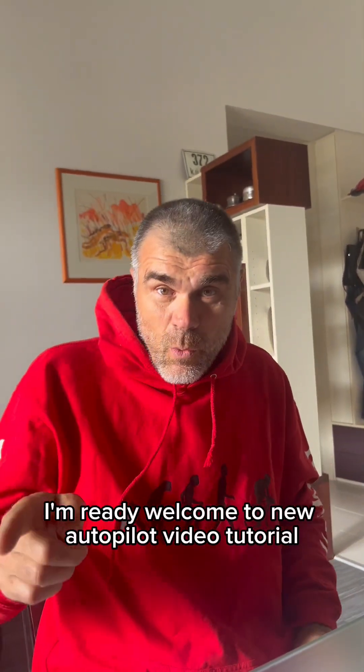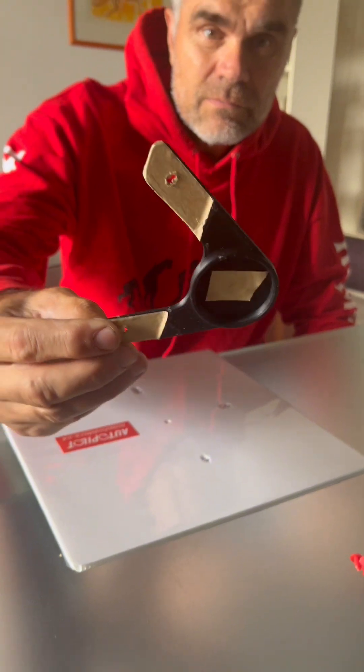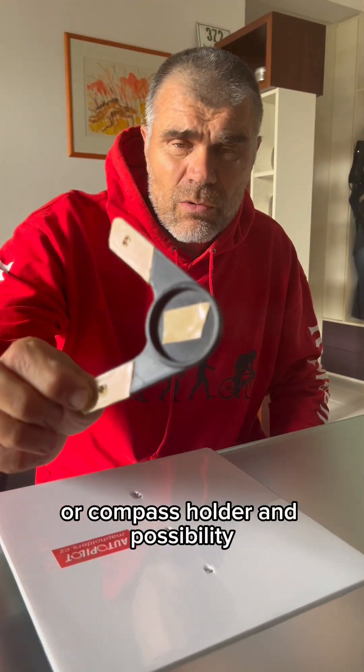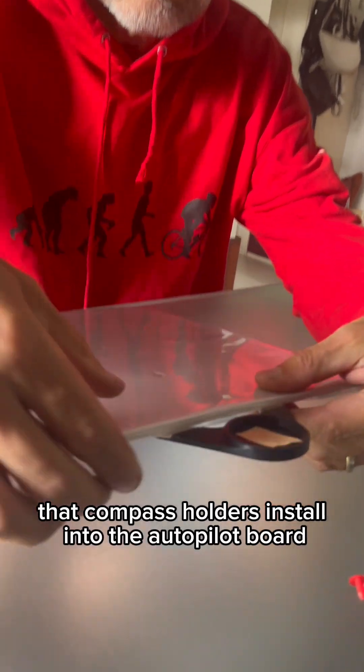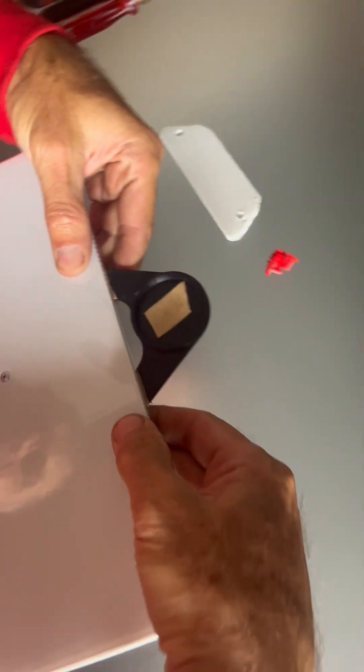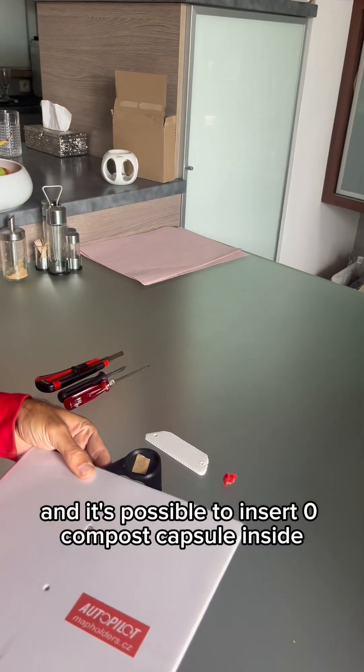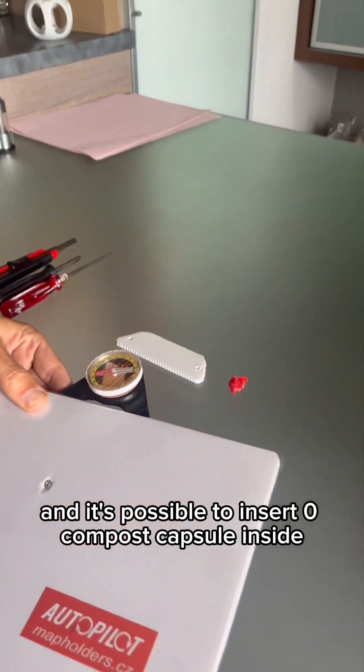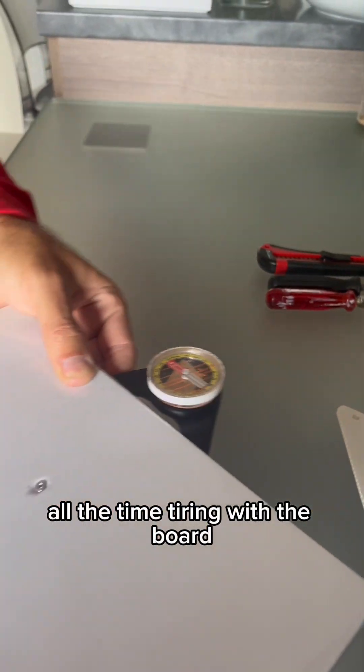Welcome to a new autopilot video tutorial. Today we'll be talking about the compass extension or compass holder and the possibility to install it into the autopilot board. It's possible to insert a compass capsule inside and have the map oriented all the time as we're turning with the board.